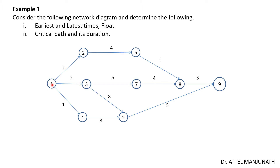In this network diagram, the circles with numbers — 1, 2, 3, 4 — are called events. The lines with arrow marks connecting events are called activities. From one event to the other, the activity is connected and its value — for example 2 — represents the duration to complete that activity. Using these activity durations, we need to calculate earliest time, latest time, float, and the critical path.